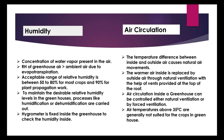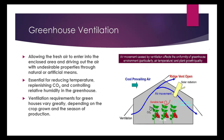Air temperatures above 35°C are generally not suited for crops in greenhouses. Greenhouse ventilation involves allowing fresh air to enter the enclosed area and driving out air with undesirable properties through natural or artificial means.